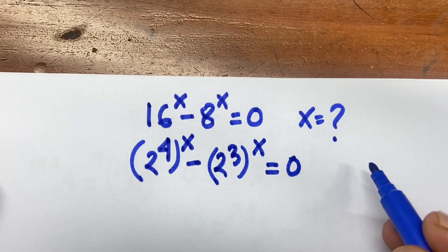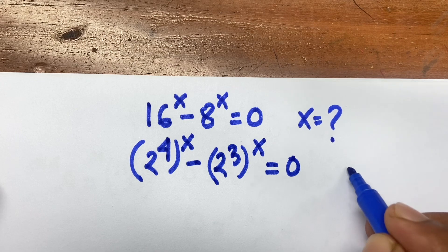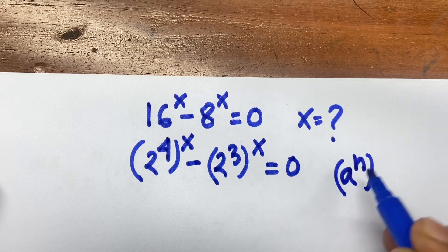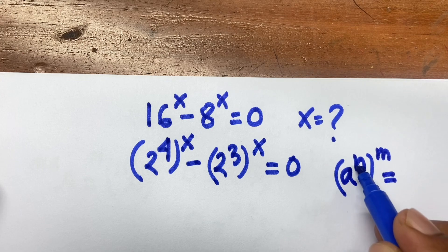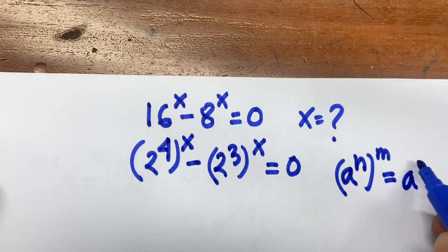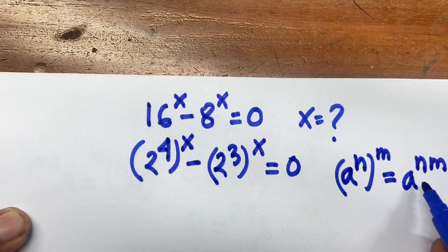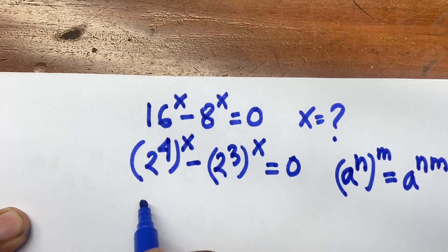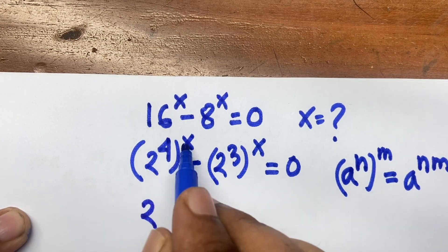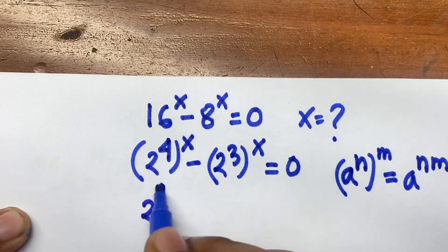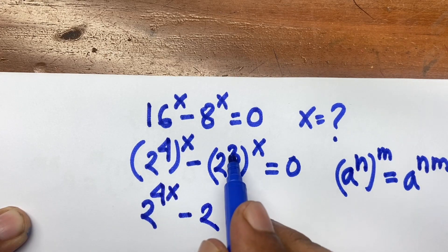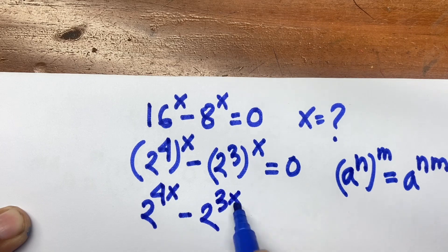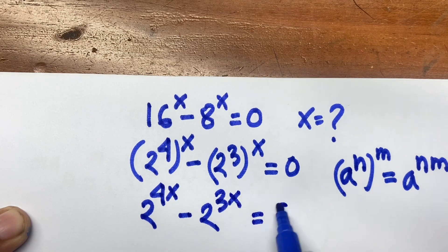Now, according to exponential rules, we know that a to the power n bracket m is equal to a to the power n times m. So, here is a to the power n times m. Now, according to this rule, we can say here is 2 to the power 4 times x equal to 4x, minus 2 to the power 3 times x equal to 3x, is equal to 0.